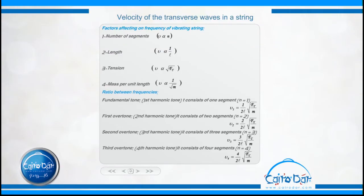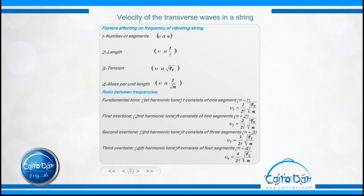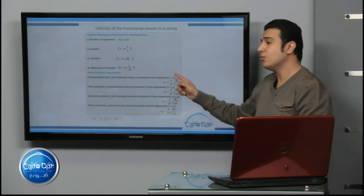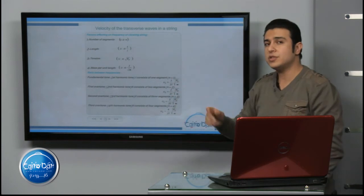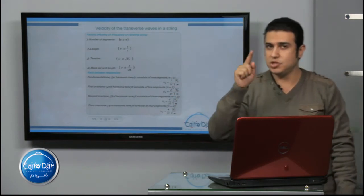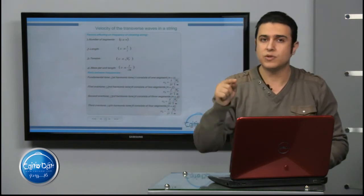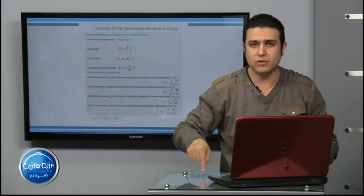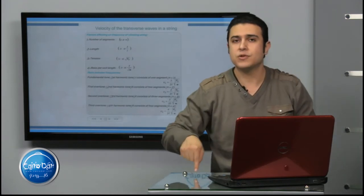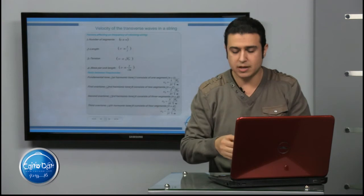What about the fourth harmonic tune or third overtone? It consists of 4 segments, so nu₄ equals (4 / 2L) × √(Ft / m). Therefore, the ratio between the frequencies will be 1 to 2 to 3 to 4, meaning nu₁ : nu₂ : nu₃ : nu₄ = 1 : 2 : 3 : 4.